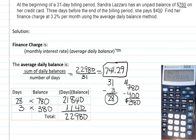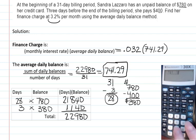So we're going to take our monthly interest rate, which is 3.2% in decimal form. So move that decimal two places to the left and we get 0.032. And then we're going to multiply that times the average daily balance, 741.29. 741.29 times 0.032 is about $23.72. That's how much she's going to be charged for borrowing that money for the month.